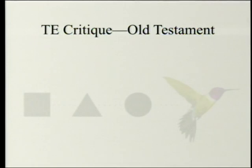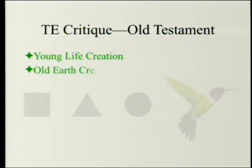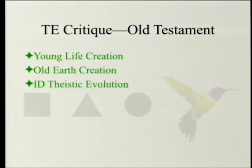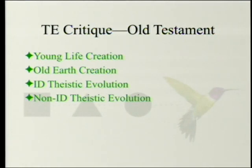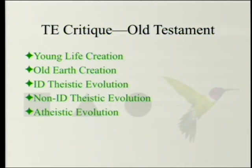It is dealing with the question of how does God relate to the universe, and in particular how the universe came to be. One can go with young life creationism, old earth creationism — more precisely old life creationism — or something more gradual but still with God involved, which would be ID-friendly theistic evolution. One can go with theistic evolution not friendly to intelligent design, where God may or may not have intervened but if he did you can't tell. And finally there's the view that God didn't intervene because there is no God — atheistic evolution.